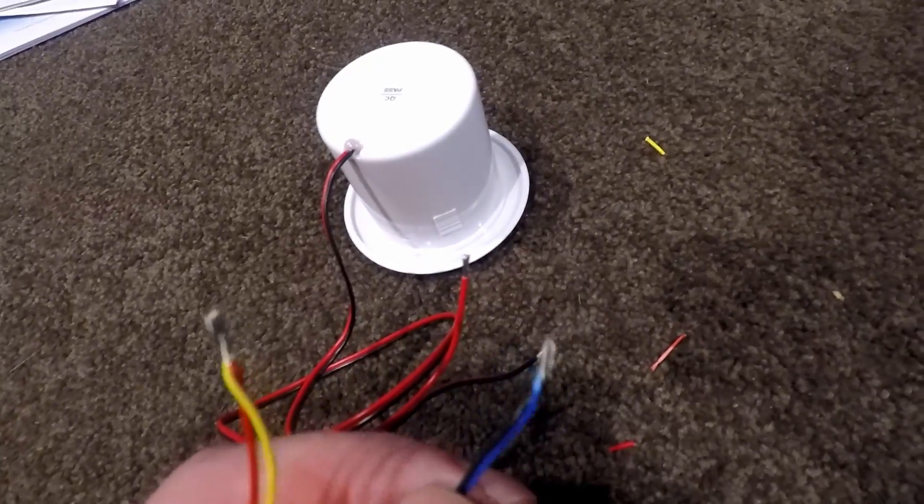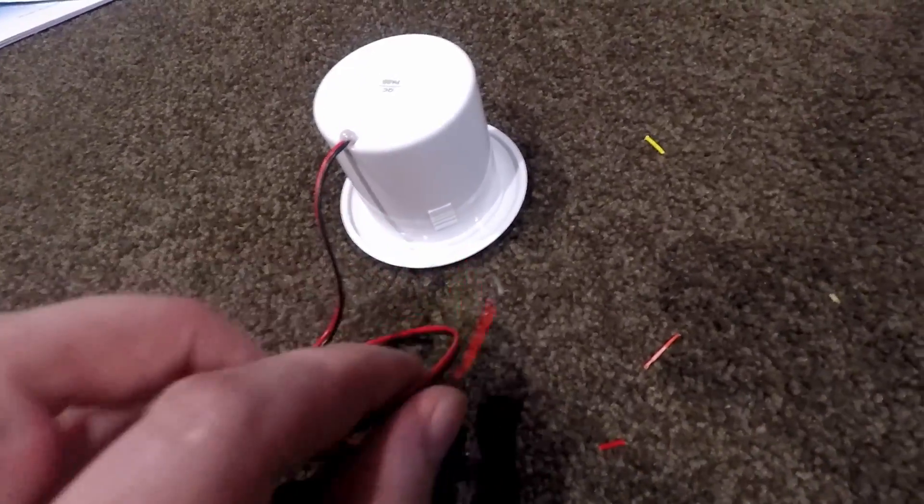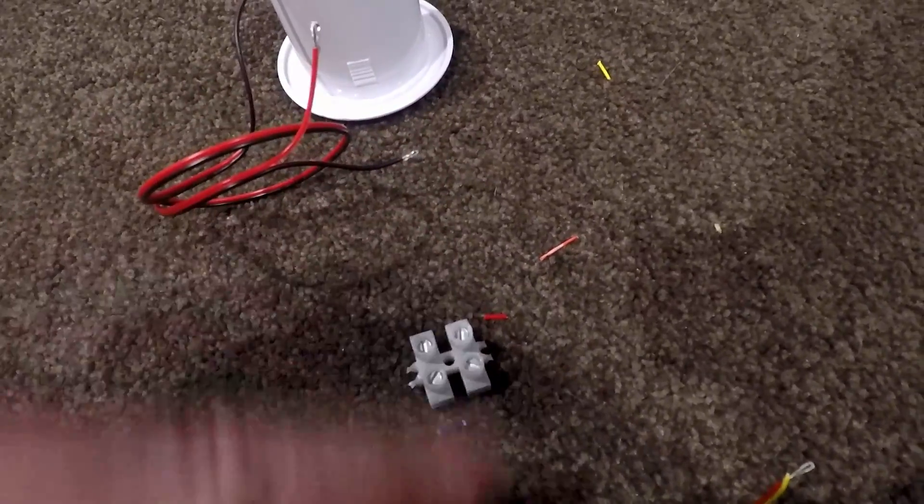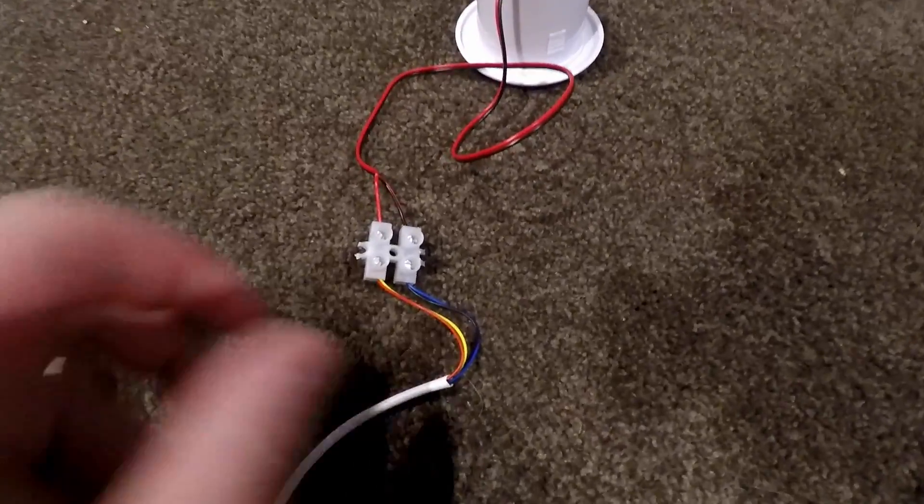So what I've done is just twisted these calls together, folded them over, same with those ones and I'll chuck a connector block in between the two. And there we go, simple as that.